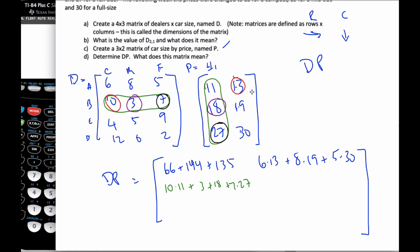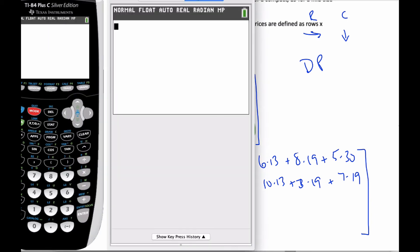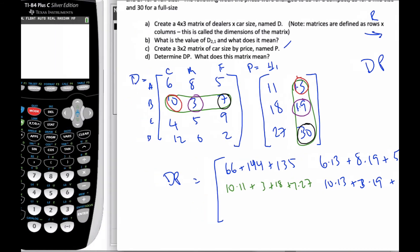But when I go on to the next column, moving it over to this one, this will be second row, second column. So this position, it's going to be 10 times 13, plus 3 times 19, plus 7 times 30, and so on and so forth. This could get really tedious with big numbers, and we always have our calculator. So I'm going to switch over to our calculator.